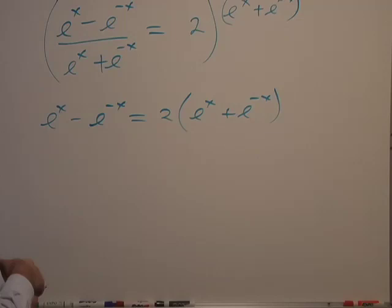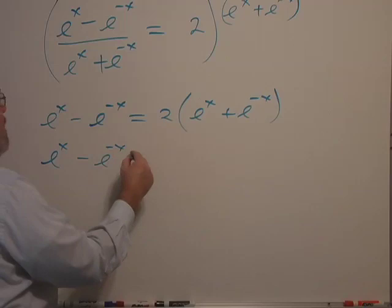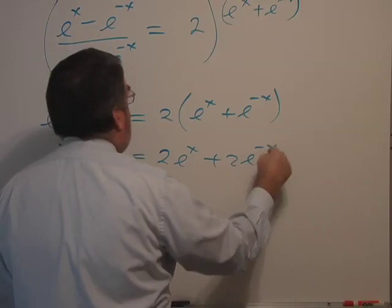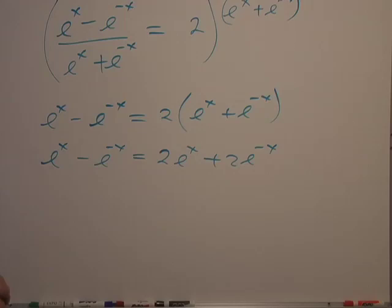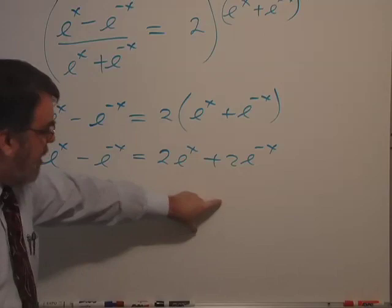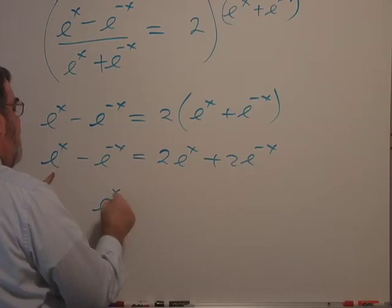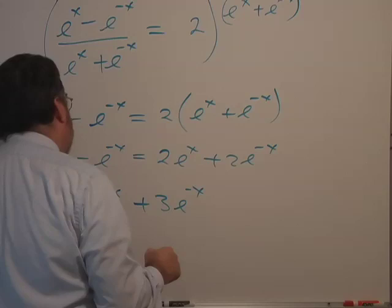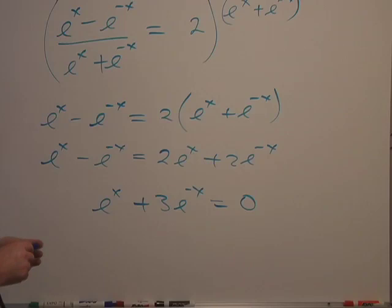Let's combine terms. So e to the x minus e to the minus x equals, I'll multiply through here, 2e to the x plus 2e to the minus x. And then if we combine these, I'm going to move these terms over to here. So by subtracting e to the x, I end up with negative e to the x. And then if I add this term over here, I get plus 3e to the minus x equals 0.